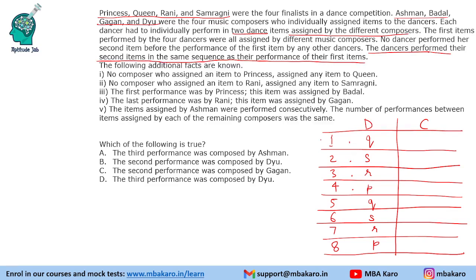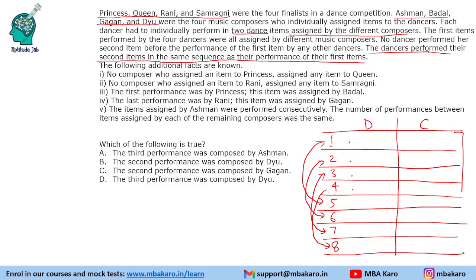Basically, what it means is: the first performance will be by the same person as the fifth, the second will be the same as the sixth, the third the same as the seventh, and the fourth the same as the eighth. And apart from this, for the composers that is not necessarily true — it does not say that the composers will also repeat.